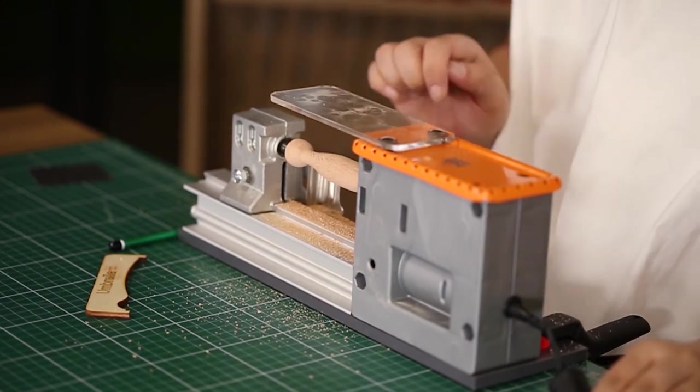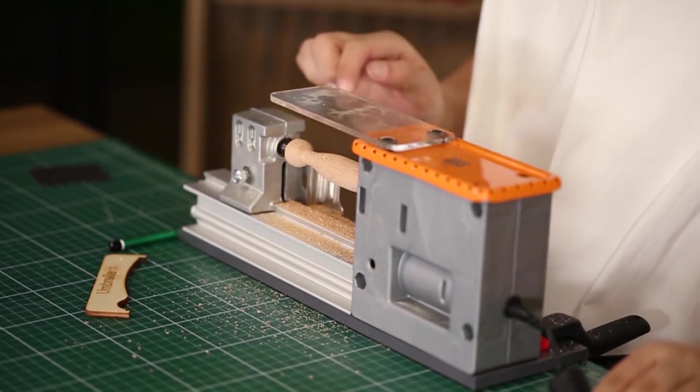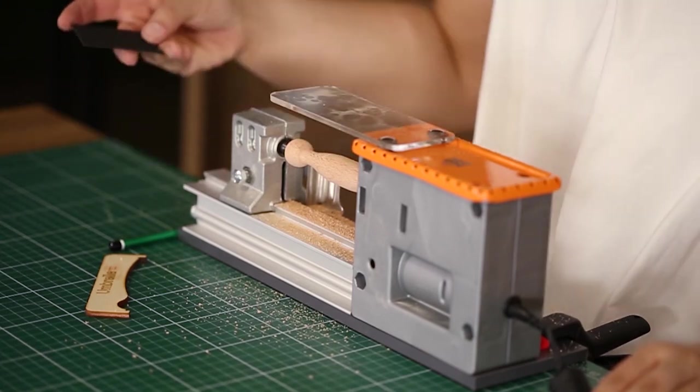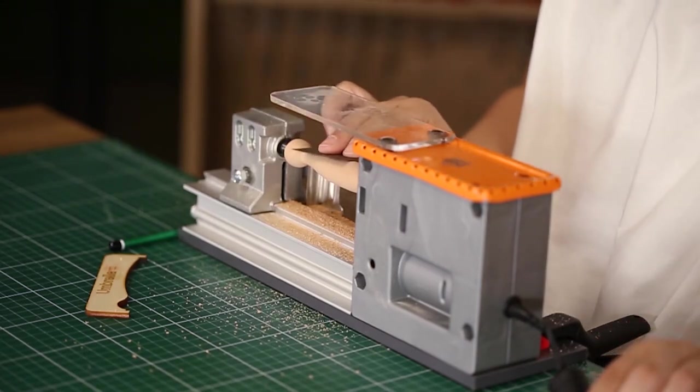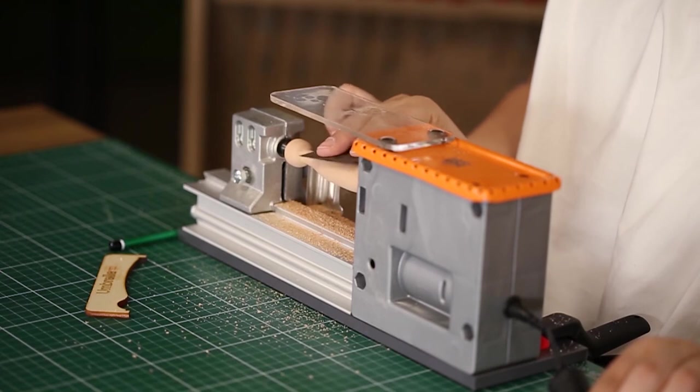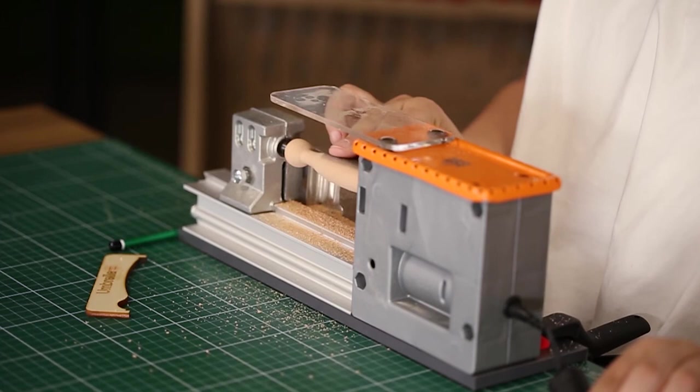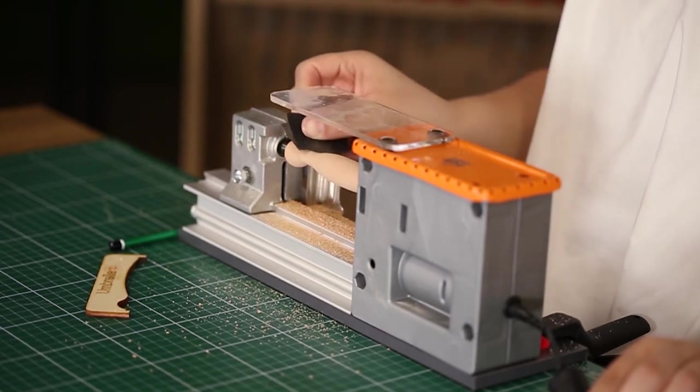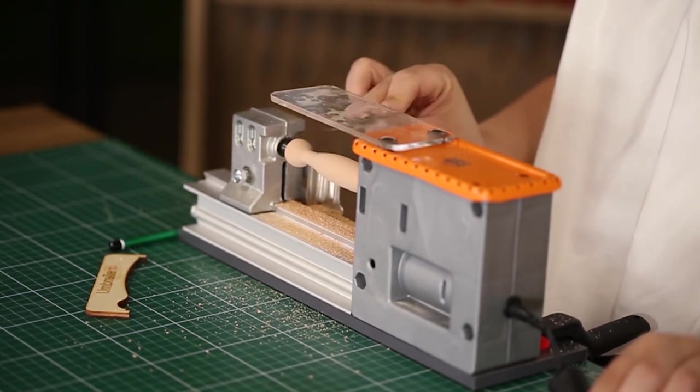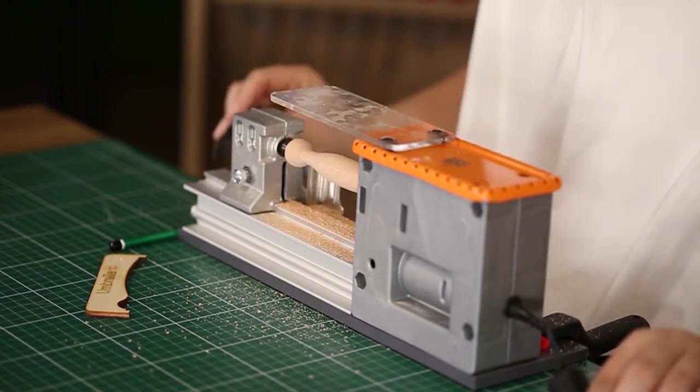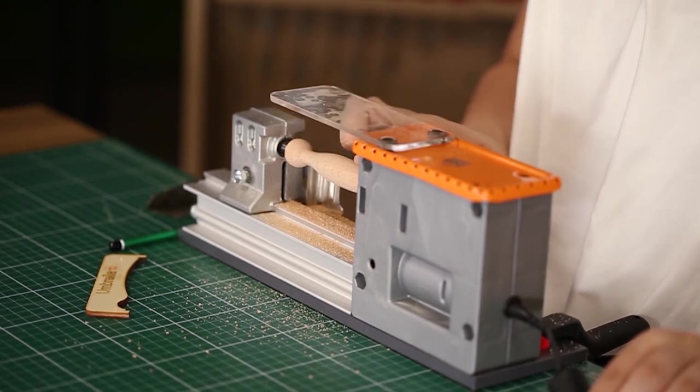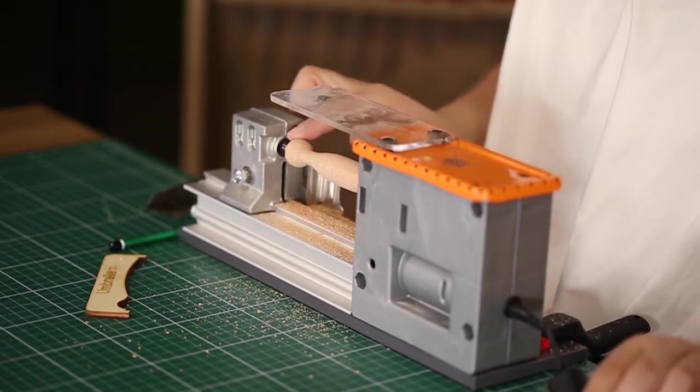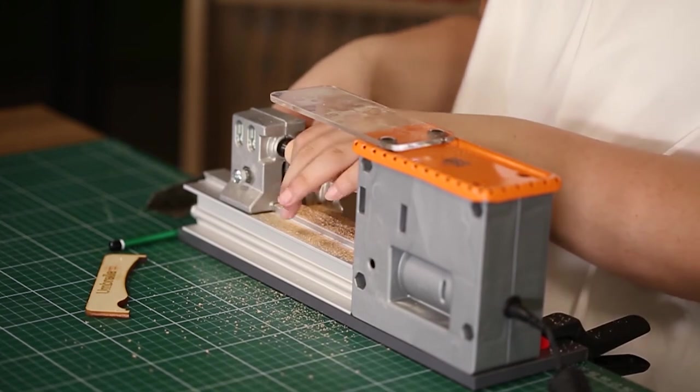At the end of the shaping process, you will see little particles on the surface. We will clean these particles with sandpaper. At the end of cleaning the particles, as you see, our surface is more smooth. Now we can take it out.